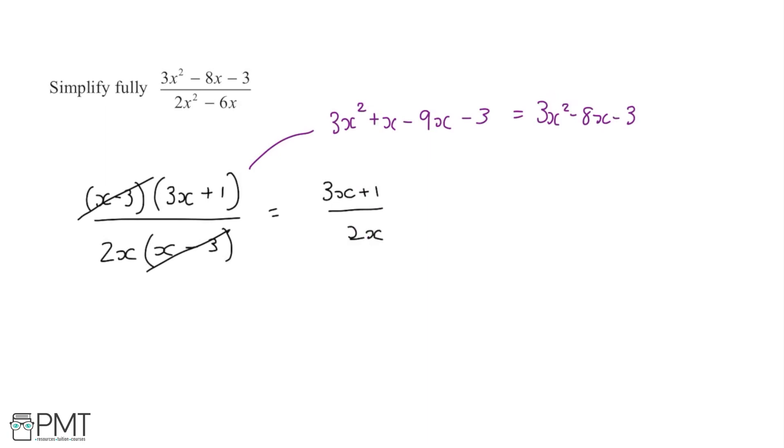Now although there is an x term in the numerator, this term is just a plus 1, so there isn't an x term there, and we can see that there's no way of simplifying this fraction anymore. So this 3x plus 1 over 2x is the simplified version of this fraction, and we've answered the question correctly.